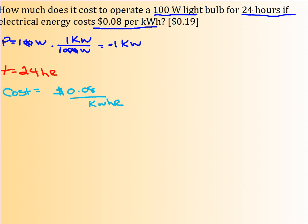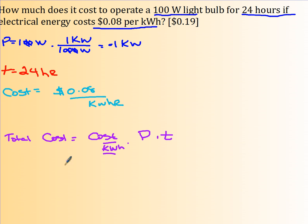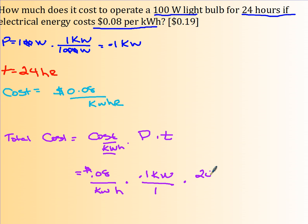Now, the total cost is going to be the cost in kilowatt hours times the power times the time. Because this will be in kilowatts, and this will be in hours. So the cost per kilowatt hour is 0.08. Kilowatt hour times the power is 0.1 kilowatt, times the time which is 24 hours. Kilowatts cancels, hours cancels. So I'm just left with money: 0.08 times 0.1 times 24, and I'm going to round this to 0.19.